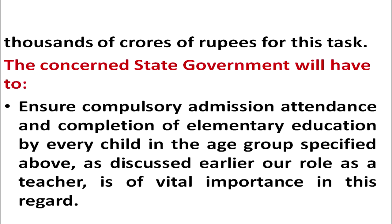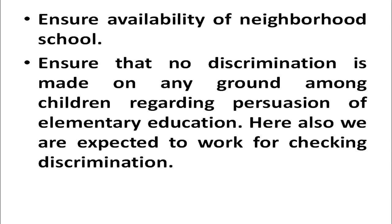The concerned state government will ensure the compulsory admission, attendance, and completion of elementary education by every child in the age group of 6 to 14 years. It is the duty of the government to ensure availability of neighborhood schools and that no discrimination is made on any ground among children regarding pursuit of elementary education. If discrimination is found in any school, it must be stopped.